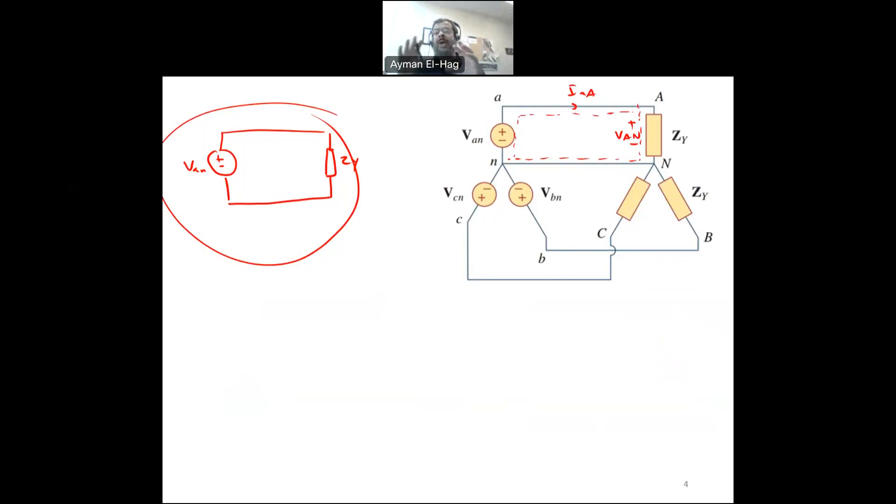And then we can find the other phases, knowing that the B phase has minus 120 and the C phase has plus 120 phase shifts. So when we have Y-Y connection, easily isolate one phase, work on that phase, and once you are done with all the calculations, you go back to the three-phase system and find any three-phase quantities needed.